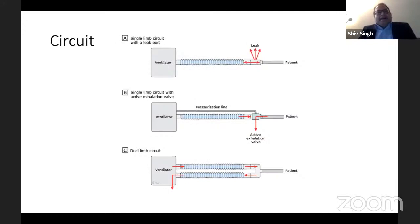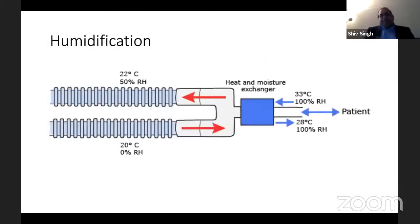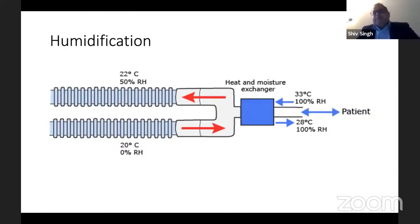Coming to the circuit: we can have a single limb circuit where expiration is passive, or a single limb circuit with an active exhalation valve controlled by a pressurized line. Or we can have a dual limb circuit, like our normal breathing system, with separate inspiratory and expiratory limbs. We can use HME filters, which provide some amount of humidity — simple to use, but you need to change them every 12 to 24 hours depending on the type.